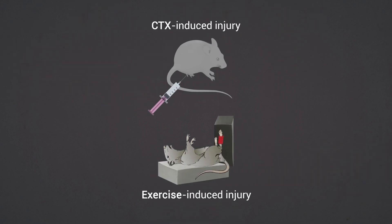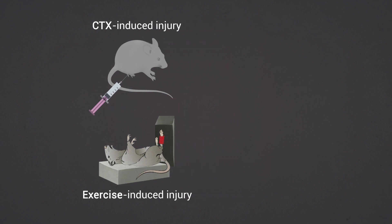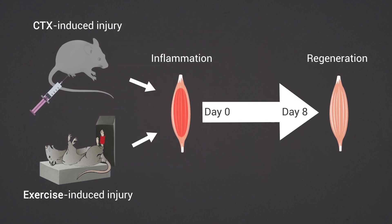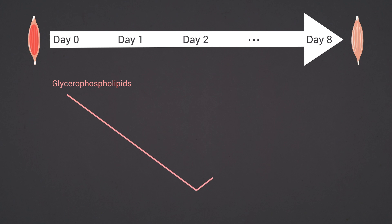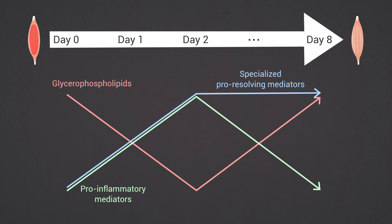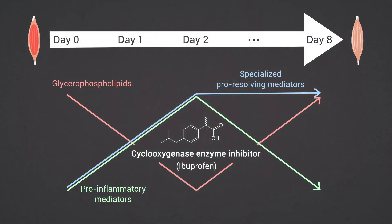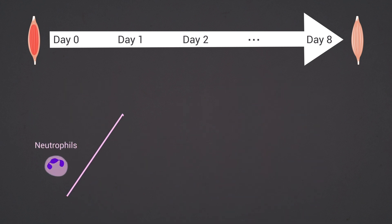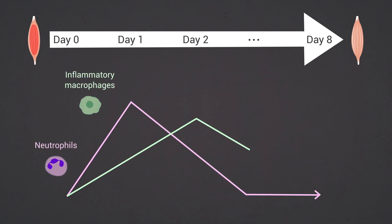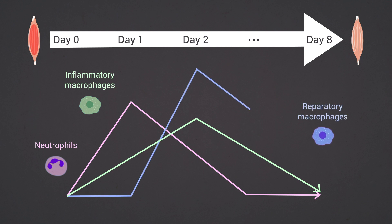In this study, by using two distinct models of acute muscle injury in mice, we elucidate dynamic regulation of the mediator lipidome during sterile skeletal muscle tissue inflammation and regeneration. We identified temporal regulation of glycerophospholipids and production of pro-inflammatory and specialized pro-resolving lipid mediators, which could be modulated by ibuprofen.